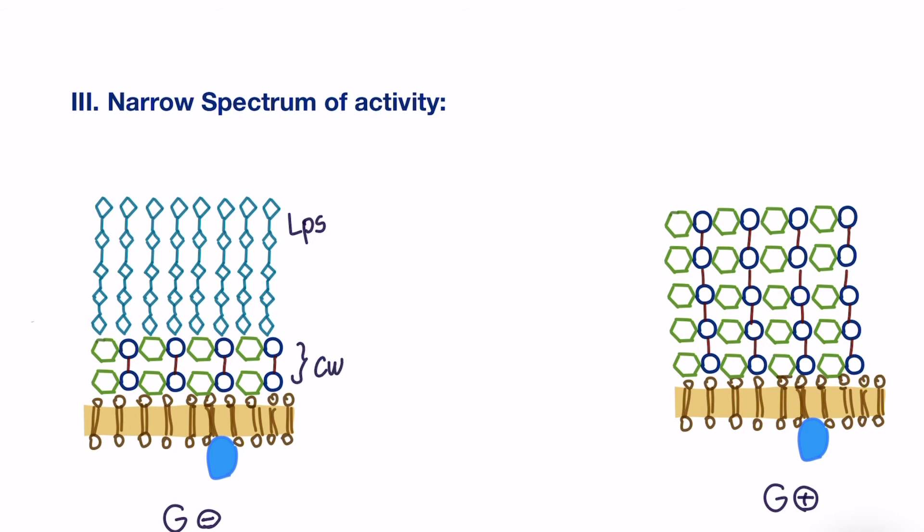On the other hand, gram-positive has no LPS, which means that penicillin will be able to directly reach the cell wall.